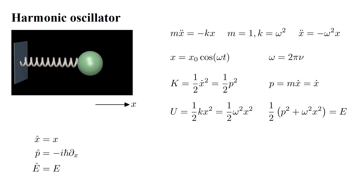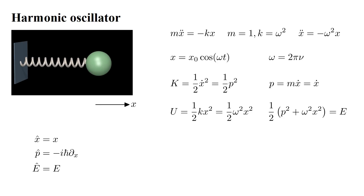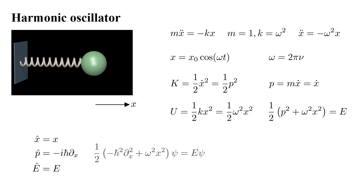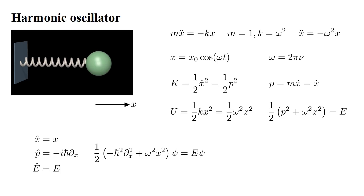Now we analyze the system quantum mechanically. We replace x, p, and E by operators. The x and E operators are just multiplication by x and E. The momentum operator is the imaginary unit i times h-bar times the slope in x. H-bar is Planck's constant h over two pi. This gives us the harmonic oscillator Schrödinger equation: one-half times minus h-bar squared times the slope of the slope in x, plus omega squared x squared, applied to the wave function psi, equals the energy times psi.